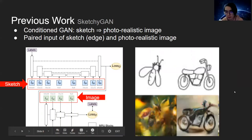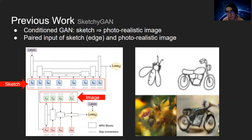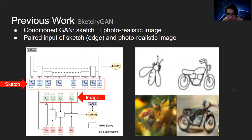In the previous work section, we reviewed several models developed for similar goals. The first one is SketchGAN, which is a conditional GAN that converts sketches into photorealistic images, and is not confined to human face image synthesis. SketchGAN takes a paired input to train — one for the sketch and another for the ground truth photorealistic image. The drawback, as shown in the right figure, is the low image quality and faithless synthesis, meaning the generated image can deviate from the intention of the sketch.